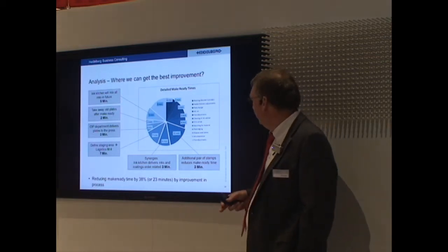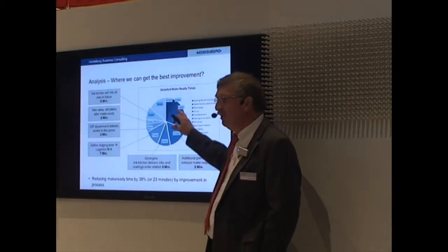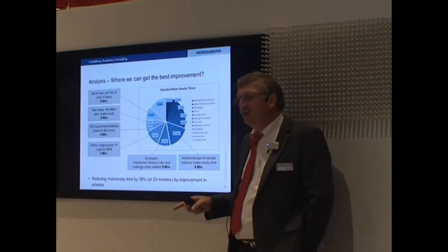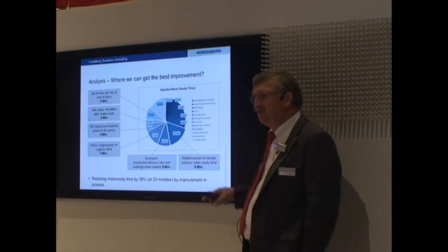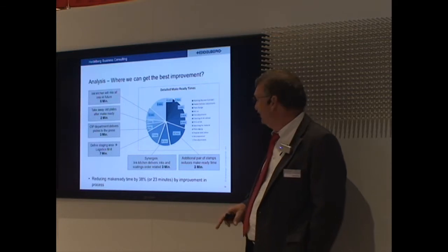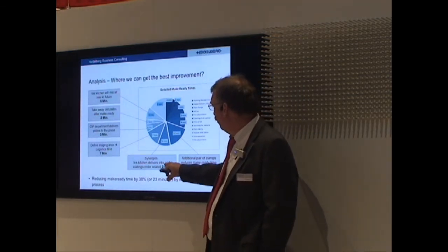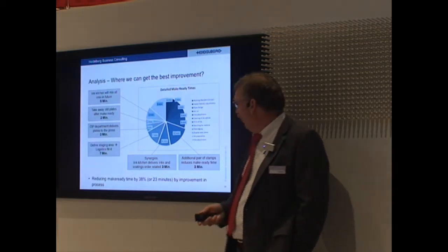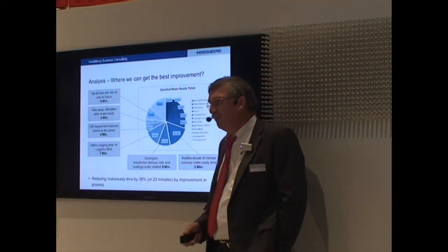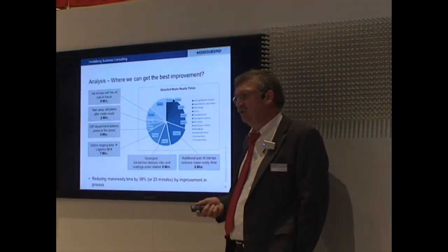But we also found two other things in the machine-related make readies by getting an additional pair of clamps. You could do an ink change faster, a color change faster, that brings about three minutes. And we have another synergy because we deliver the inks and the coatings order related. So all overall, we were able to reduce the make ready time by 38% or 23 minutes, and this could go straight into production.